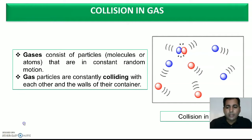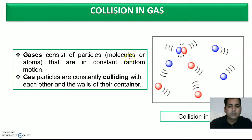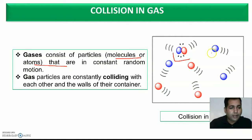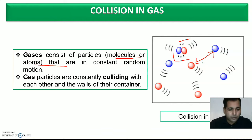Let us talk about collision in gases. As we know, gases consist of particles which have molecules as well as atoms. You can see in this picture we have molecules as well as atoms, and they are in random motion. When particles are in random motion they generally collide with each other. After collision, some amount of energy is generated, and that colliding process of these random atoms and molecules is called collision of the particles.